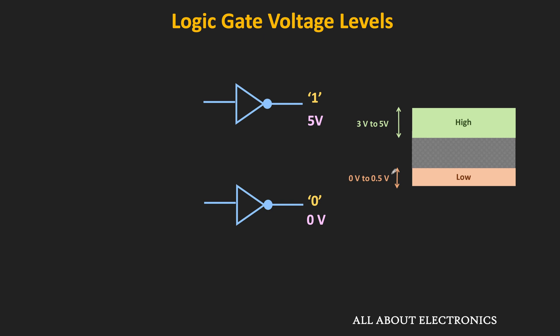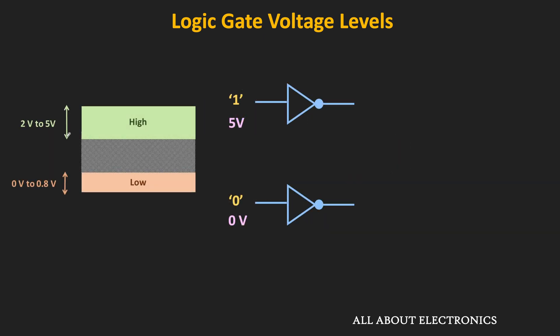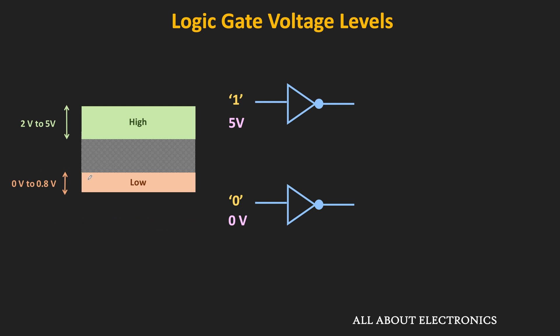These voltage ranges depend on the logic family of the logic gate. For example, these voltage levels are the input voltage levels of the TTL gate. That means whenever the logic gate is designed using TTL logic, the input will be considered as either logic 1 or logic 0 depending on these voltage levels. Depending on the logic gate family, both input and output voltage ranges will change. For example, if you see any CMOS based logic gates, then the acceptable input and output ranges will be different.